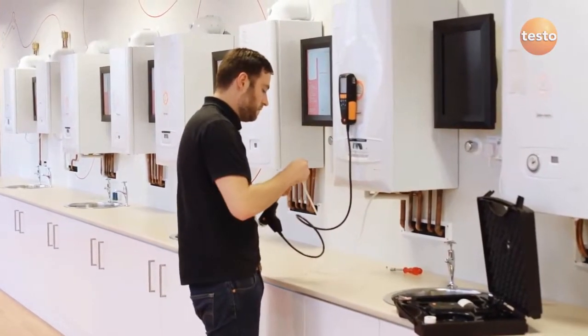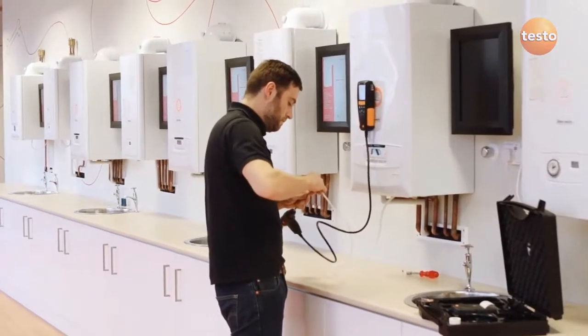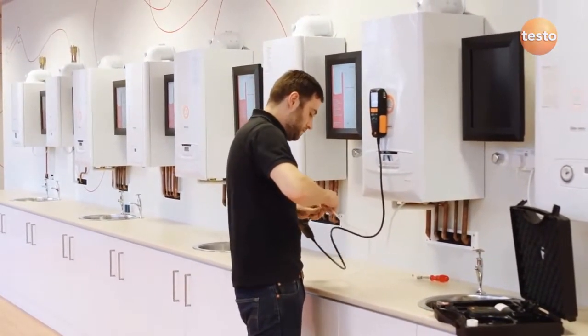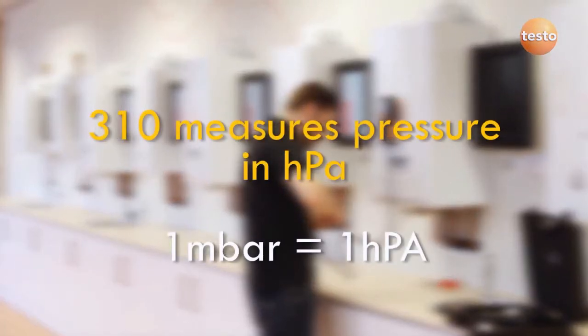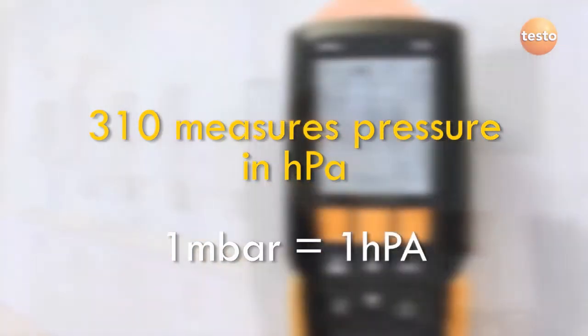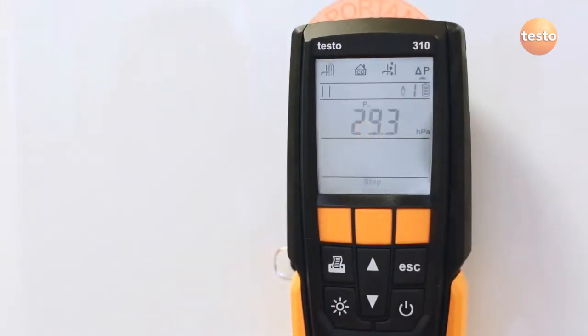You can fit the silicon hose to the probe and connect it to the test point to measure the gas pressure. The 310 displays pressure in hectopascals, but if you prefer to record in millibars, just remember that one millibar is equal to one hectopascal. When you press stop at the end of the test...